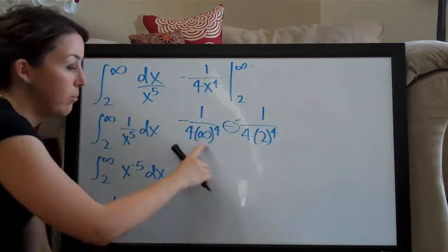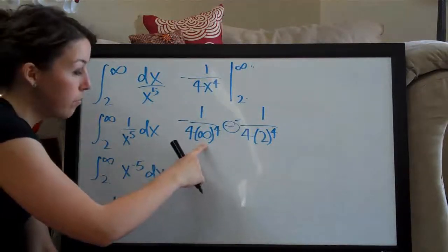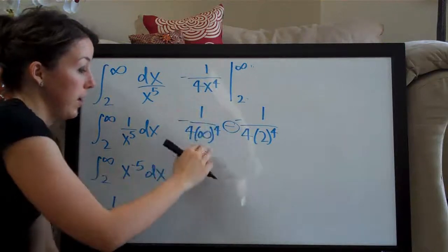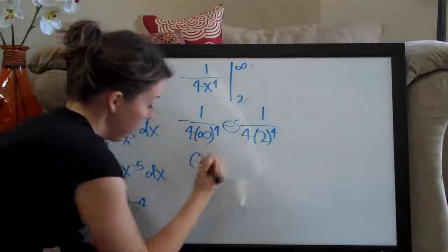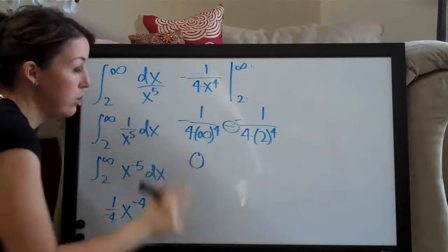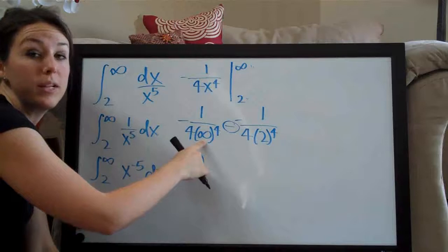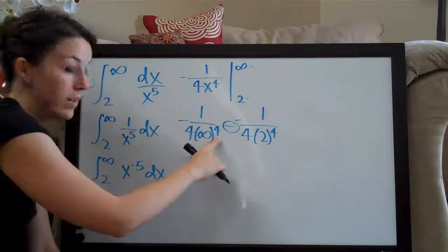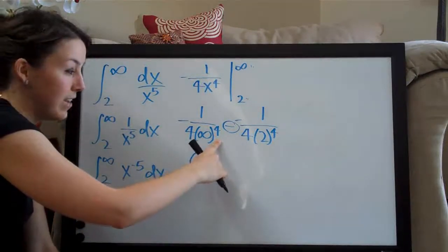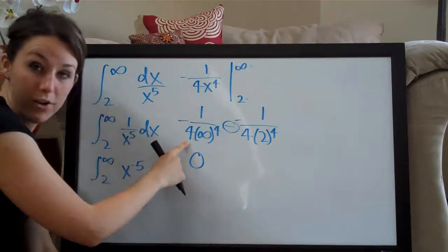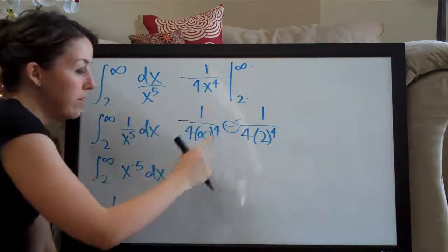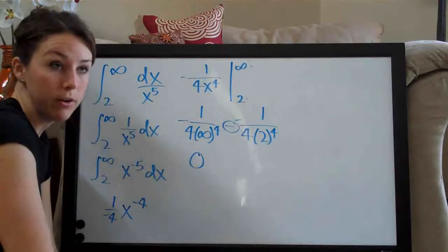If you do that, if you plug in a really large number into this term here into your calculator, you end up getting zero out in front here. And you can kind of see that because if this is a really, really, really big number and then you raise it to the fourth power, it ends up being an even bigger number. And then you multiply it by four and it ends up being an even bigger number. And you've got one divided by a huge number.